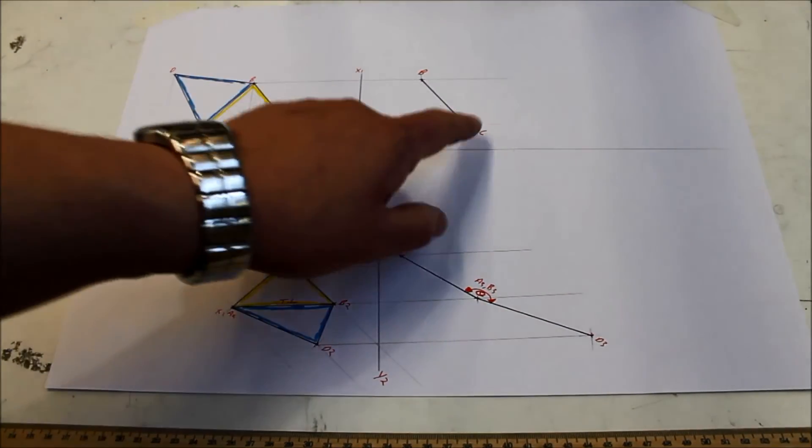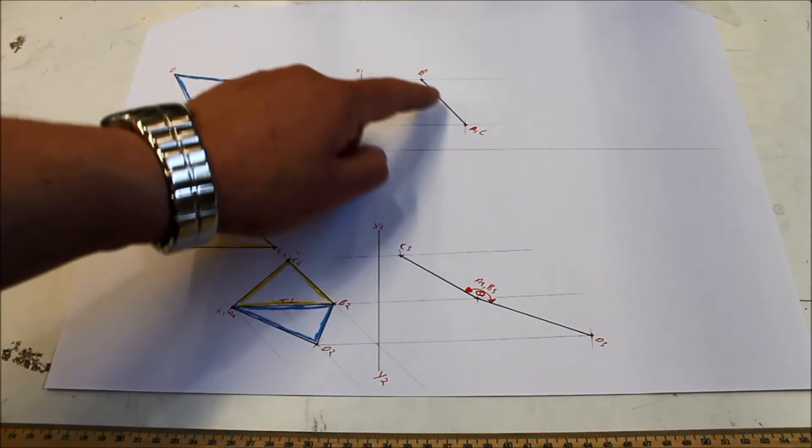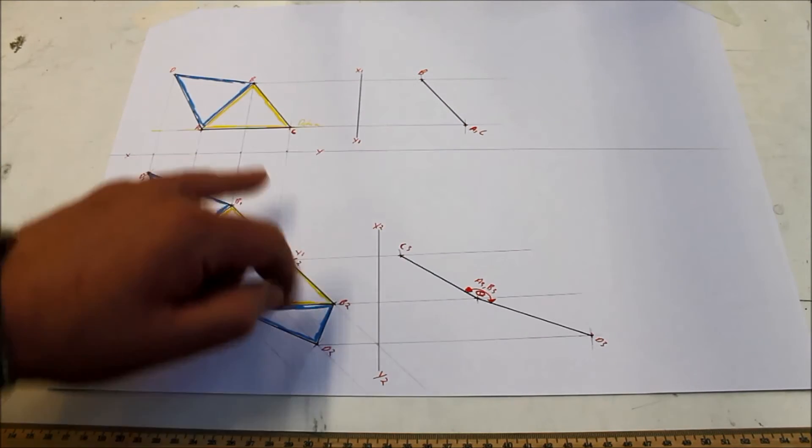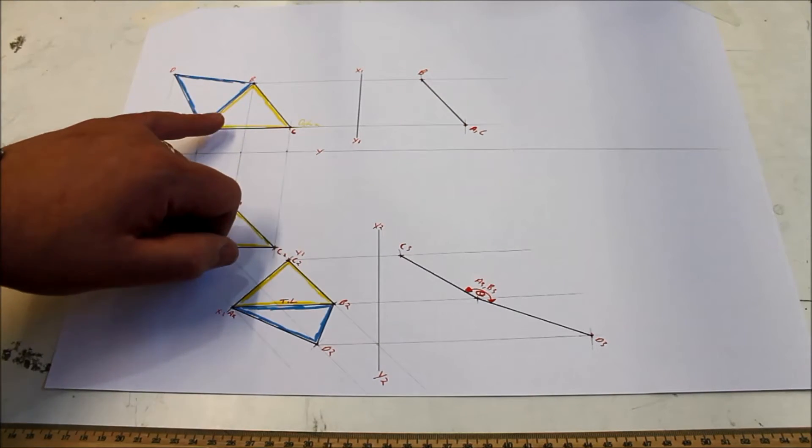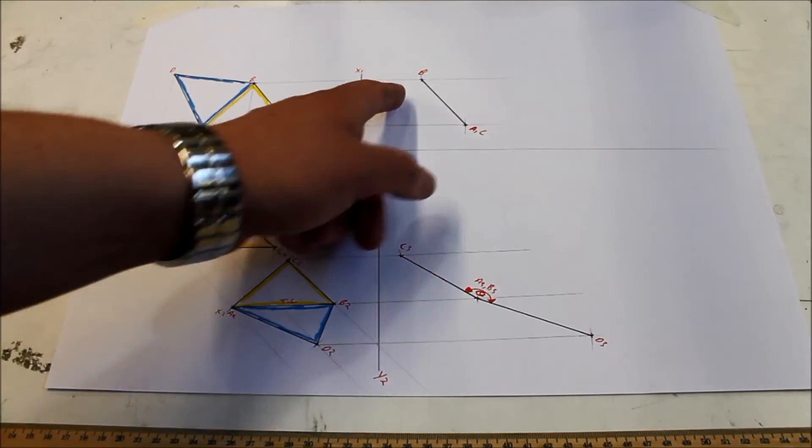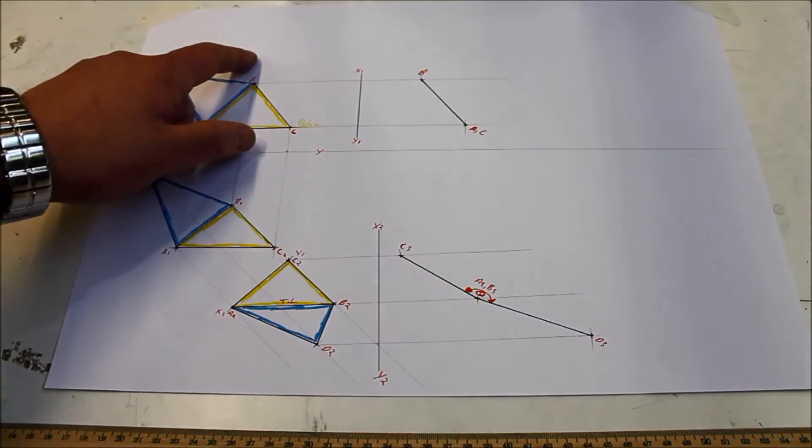So that view is giving you a point view of the line AC and an edge view of the plane. Now this is a true height from AC, that baseline up to B. So what we need to do to translate that back here to the elevation is to rotate it so it's parallel to the XY line. So I'm going to rotate it up here and draw a line up from AC, find the true height, project it back, and bring point B up.